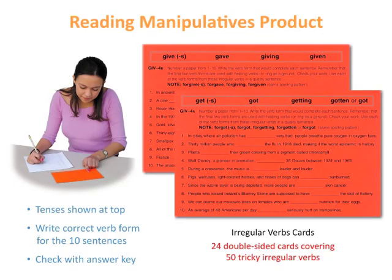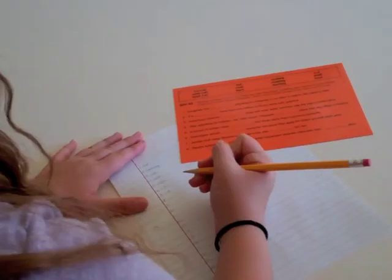Irregular verbs cards clarify the usage of fifty verbs that do not follow standard English patterns. At the top of each card, the tenses of an irregular verb are shown.